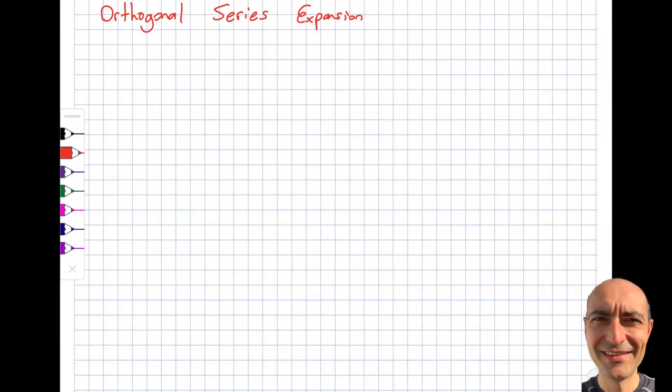All right, now I'm going to switch gears a little bit. Now we know orthogonal series. Now I'm going to look at the orthogonal series expansion. So step by step I'm going towards Fourier series expansion. As I mentioned, Fourier series is a special case of orthogonal series.